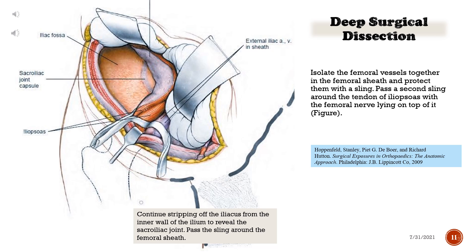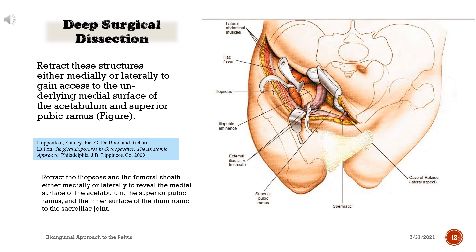Pass a second sling around the tendon of iliopsoas with the femoral nerve lying on top of it. Continue stripping the iliacus from the inner wall of the ilium to reveal the sacroiliac joint. Pass the sling around the femoral sheath and retract these structures either medially or laterally to gain access to the underlying medial surface of the acetabulum and superior pubic ramus.